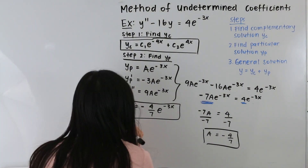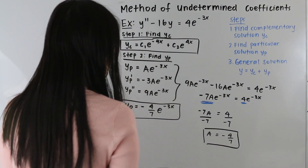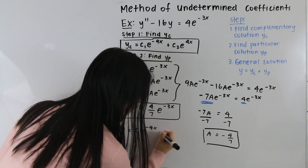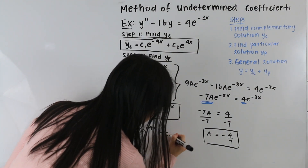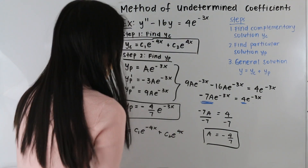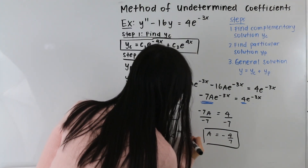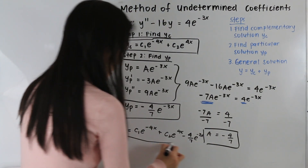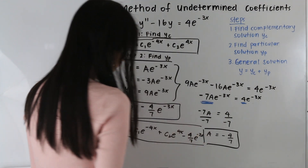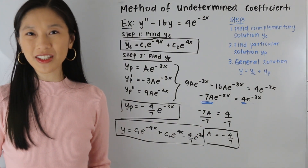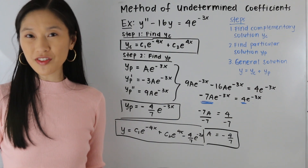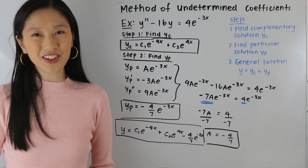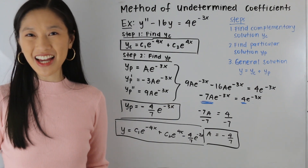So we end up with y is equal to c1e to the negative 4x plus c2e to the 4x minus 4 over 7 e to the negative 3x. And that is our final answer. That is how you solve a second order non-homogeneous differential equation using the method of undetermined coefficients when the right-hand side is equal to an exponential function. Thank you so much for watching — don't forget to like and subscribe and I'll see you next time.